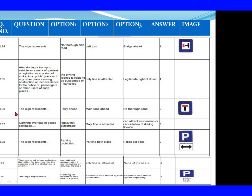Question 136: The sign represents. Option 1: Ferry ahead. Option 2: Main road ahead. Option 3: No through road. The right answer is Option 3: No through road. Question 137: Carrying passengers in goods carriers. Option 1: Illegal but not punishable. Option 2: Only fine is applicable. Option 3: Can attract suspension or cancellation of a driving license. The right answer is Option 3: Can attract suspension or cancellation of a driving license.